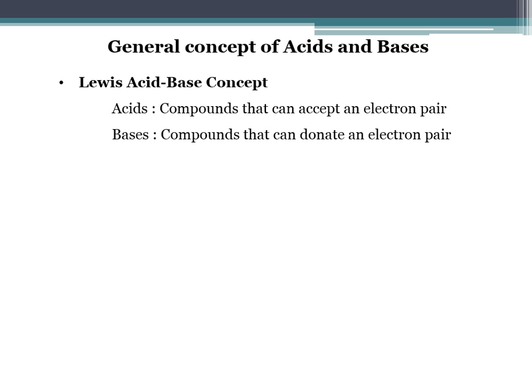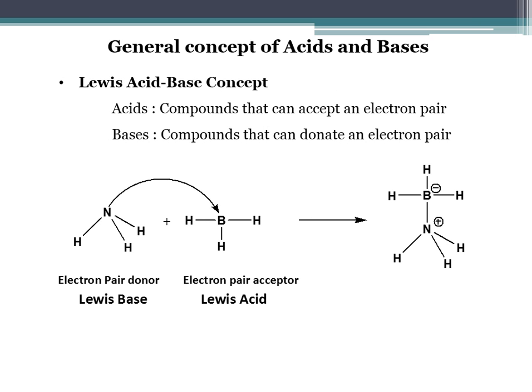Now come to the third concept: the Lewis acid-base concept, which depends on the electron pair donor and electron pair acceptor. Acids are those compounds which can accept the electron pair, and bases are those compounds which can donate the electron pair. For example, ammonia reacts with boron trifluoride to form a product. The ammonia molecule has one lone pair and boron has one empty orbital, so boron is electron deficient and ammonia is electron rich. Ammonia donates its lone pair to the electron-deficient boron — therefore, ammonia is called the Lewis base and boron is called the Lewis acid.